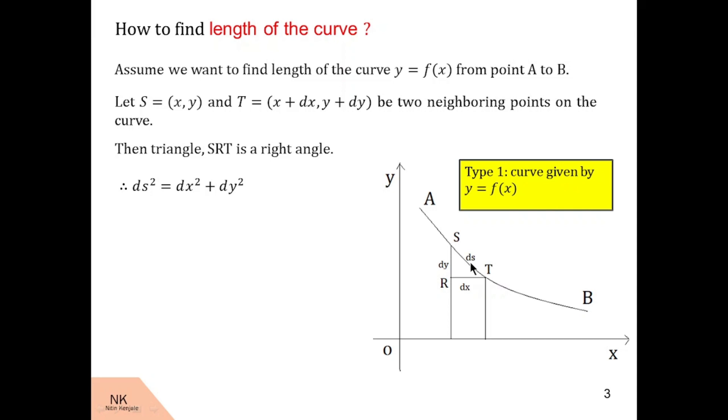Therefore, we see here by Pythagorean theorem: ds² = dx² + dy². Then dividing this equation throughout by dx², we get (ds/dx)² = 1 + (dy/dx)².